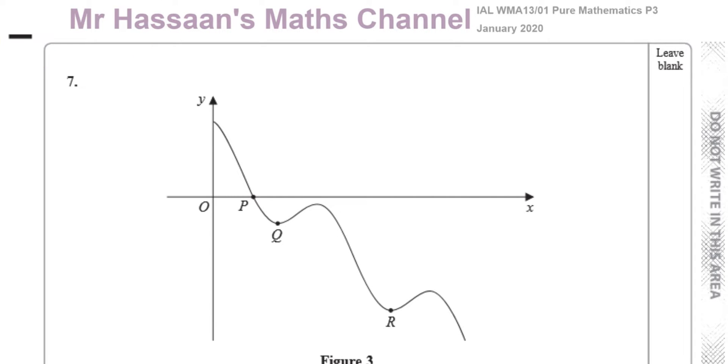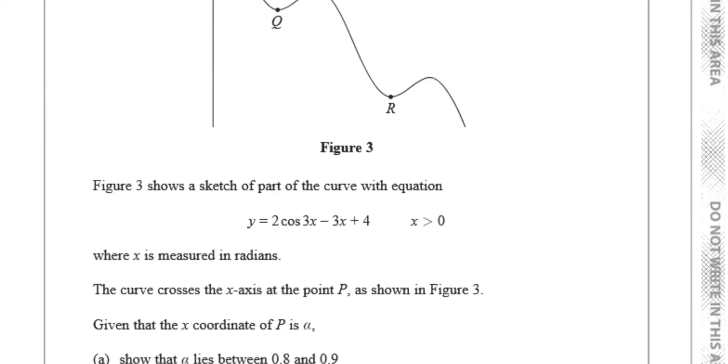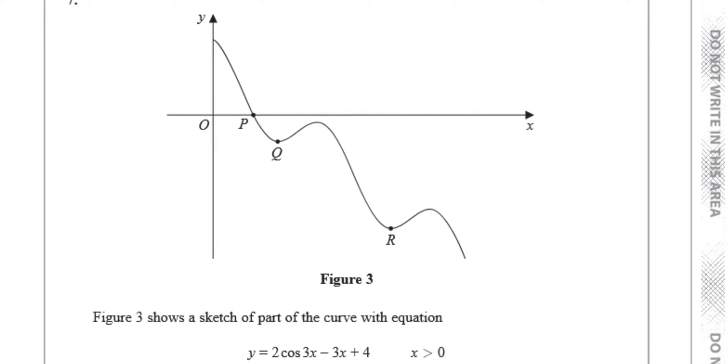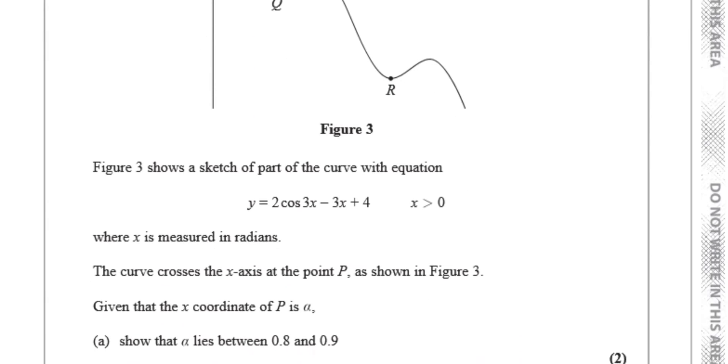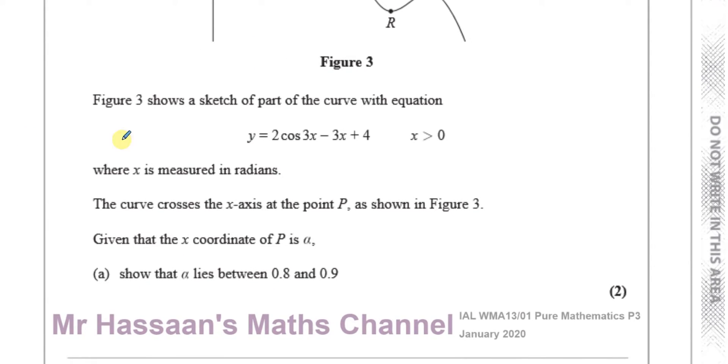And this question here is about numerical methods. It says figure 3 shows a sketch of part of the curve with equation y equals 2 cosine 3x minus 3x plus 4, and x is greater than 0, where x is measured in radians. It's very important to read the questions here very carefully, because sometimes that will mess you up if you don't read it.